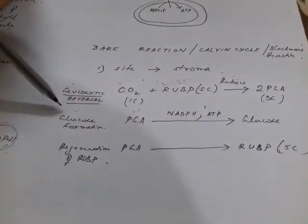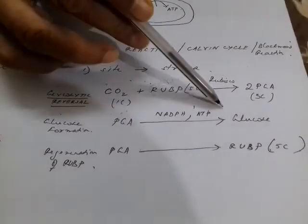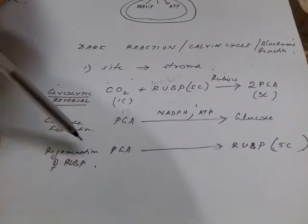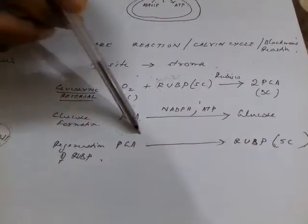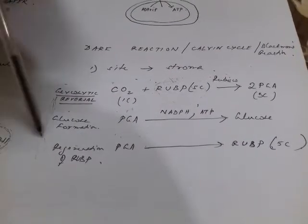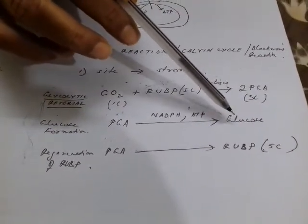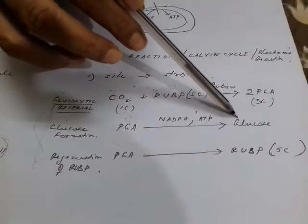The second step is conversion of PGA to glucose, which we call glucogenesis or glucose formation. The third step is conversion of PGA to RUBP, called regeneration of RUBP. At the end of the reaction, glucose used for respiration is consumed, and the rest is converted to starch and stored in various parts of the leaf.